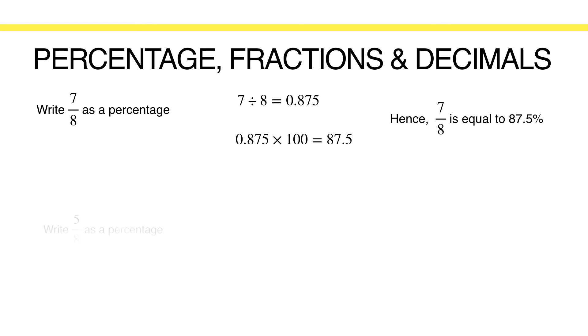Similarly, to change 5 over 8 to percentages, we can divide 5 by 8, which gives you 0.625, and we can multiply 0.625 by 100 to convert this into percentages, which is equal to 62.5%.